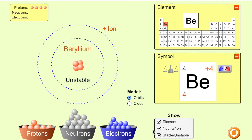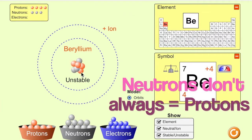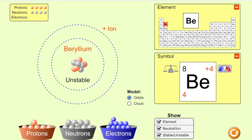If you check this box right here you'll see that this is unstable until you add some neutrons. Now some people think that the neutrons have to equal the number of protons but that's not always true. In beryllium's case it's nine total items in the nucleus — four are protons and five are neutrons.